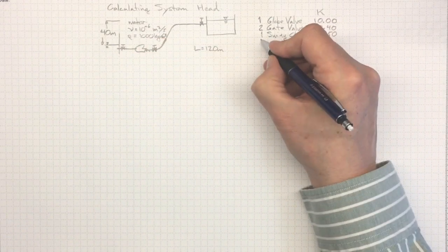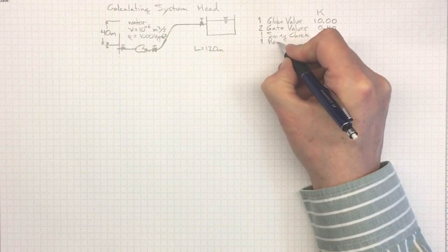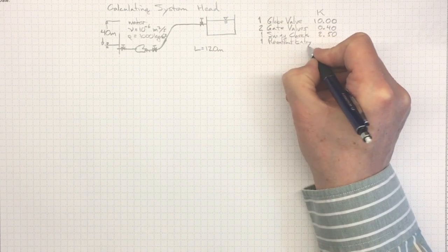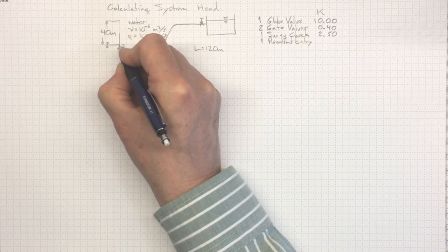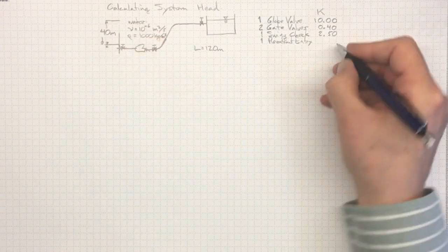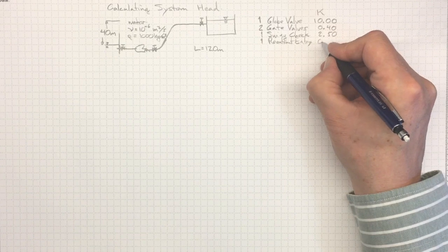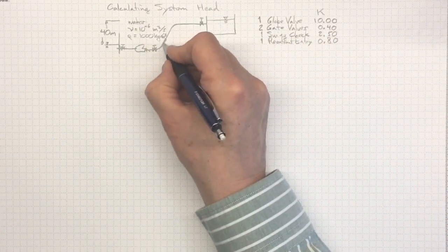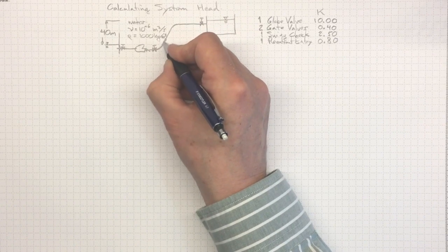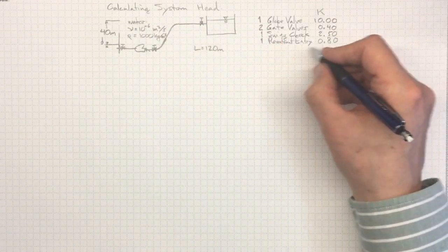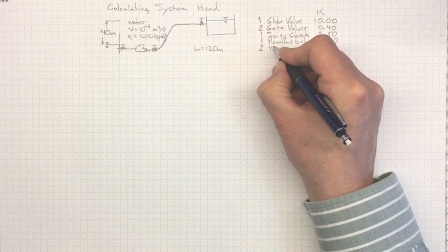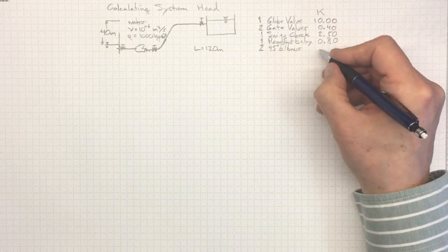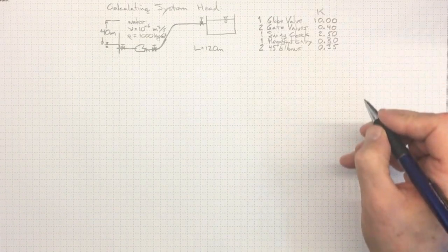This re-entrant entry, and re-entrant means that the pipe sticks out past the wall of the reservoir here, that re-entrant entry will have a K factor of about 0.8. And if we've got two 45 degree elbows here, they'll be maybe a total of about 0.35, assuming that we have long radius elbows.